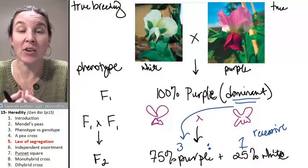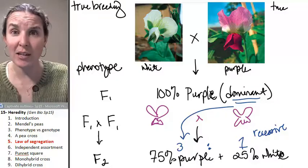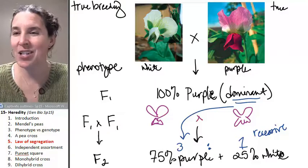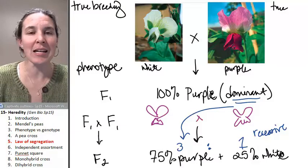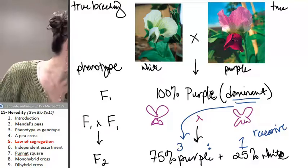So the law of segregation states that something separates or segregates during baby formation. And let's look at that. We can actually make sense of that idea because we understand the genotypes.